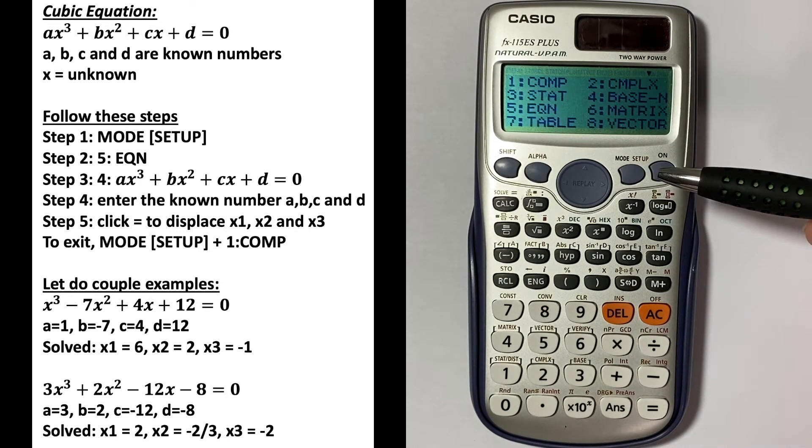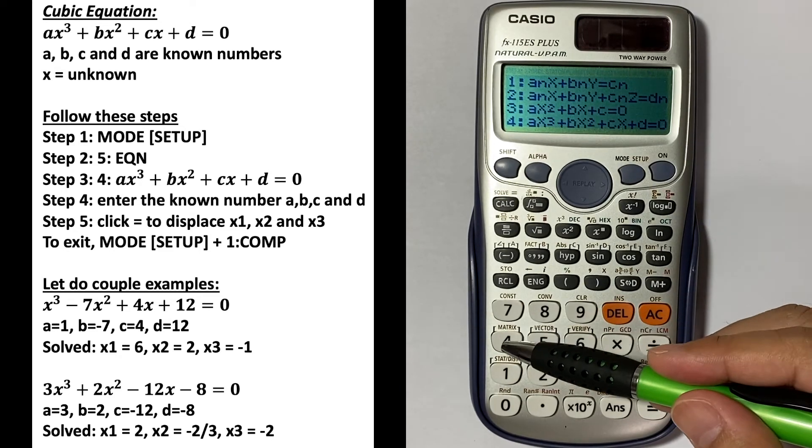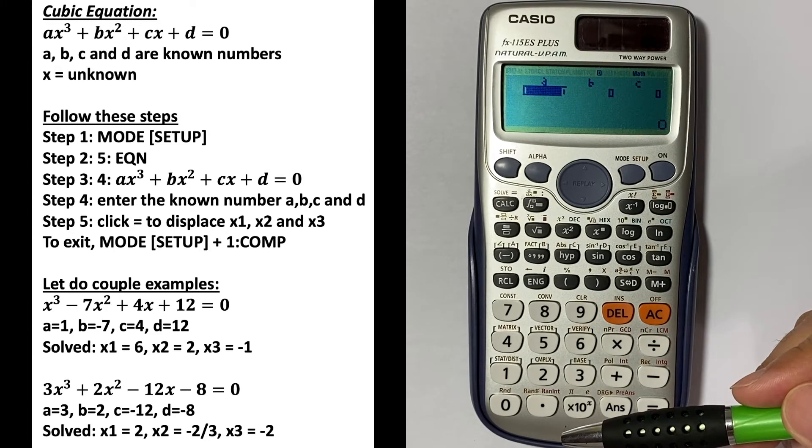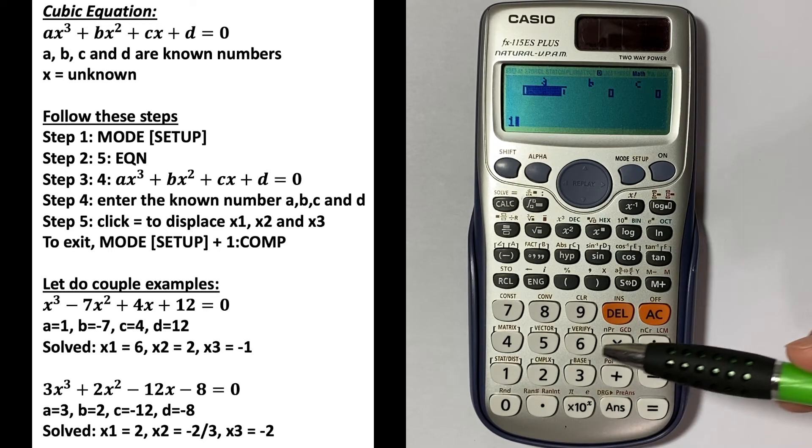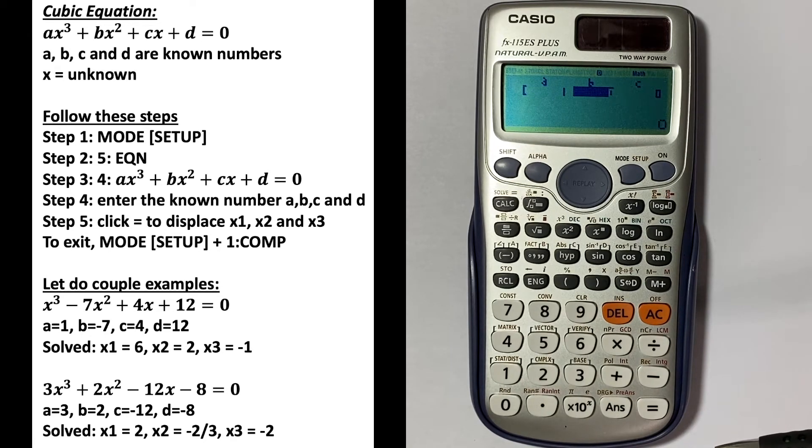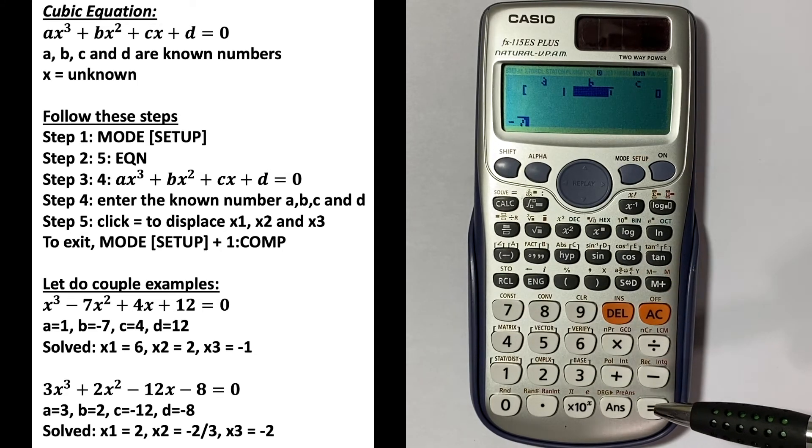First we go to MODE, number 5, and then click 4 for cubic equation. Here we enter a = 1, press equals, then we enter b = -7. We should use negative, not minus.